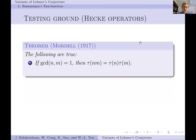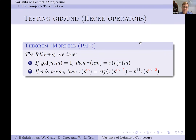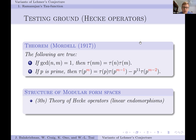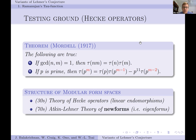Another important area related to Ramanujan's tau function is that of Hecke operators. Mordell proved in 1917 that the tau function is multiplicative: for GCD of N and M equal to one, tau(NM) equals tau(N) times tau(M). For a fixed prime P, the tau function satisfies a recurrence relation for tau(P^m). This is proven through the theory of Hecke operators on newforms, and then the theory of newforms as eigenforms for these operators.